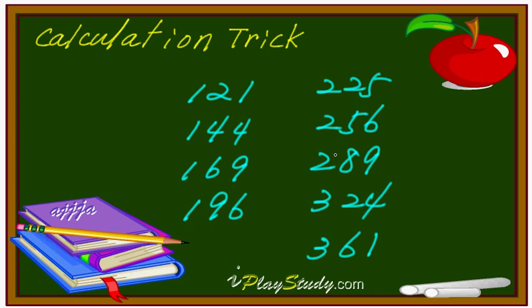Then you gotta remember: 9 more. That's it. 121, 144, 169, 196, 225, 256, 289, 324, 361. 361 is what? 19 squared. That's it, very simple.